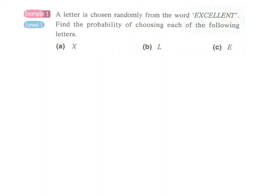Let's look at Example 1. A letter is chosen randomly from the word 'EXCELLENT'. 'Randomly' means the chance of selecting any character from the word is the same—every character has the same chance of being selected.